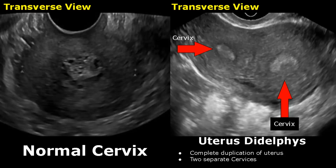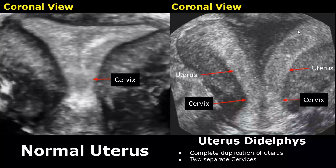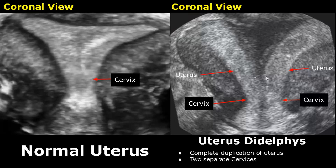These are 3D reconstructed coronal images of the uterus. This view is best for diagnosing congenital uterine malformations. This is how a normal uterus looks in a coronal 3D ultrasound image. And here we have two separate uteri — there is complete duplication of the uterus and cervix.